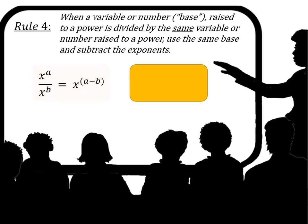Rule 4: when a variable or number — the base — raised to a power is divided by the same variable or number raised to a power, use the same base and subtract the exponents. So x to the a divided by x to the b — or x to the a over x to the b — equals x to the a minus b. For example, 4 to the fourth over 4 to the first equals 4 to the 4 minus 1.